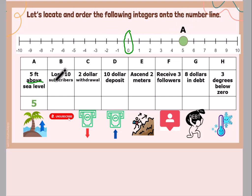Let's go to B. We lose 10 subscribers. Lose is our clue word. That means we're going to decrease. So it's going to be a negative 10. So I come up here. Here's my zero. The negatives are to the right. So I'm just going to look for negative 10. It's right here. I'm going to place my point and I'm going to label that as point B.